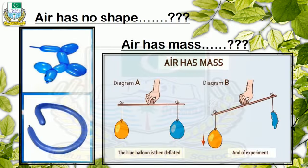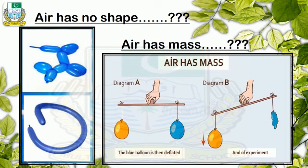The first fact is: air has no shape. To prove that, we use our sense of sight and observation. We can see that both balloons are filled with air but are in different shapes, which means air itself has no shape — it takes the shape of the container. We can also prove that air has mass: a balloon filled with air is heavier than a deflated balloon.